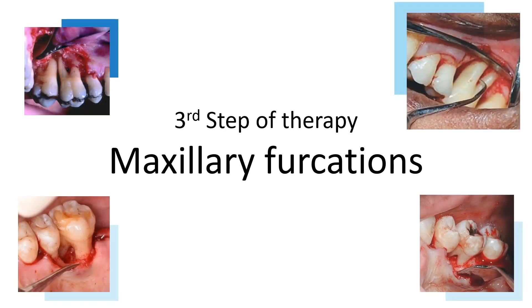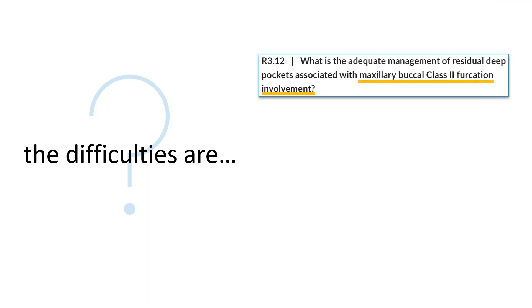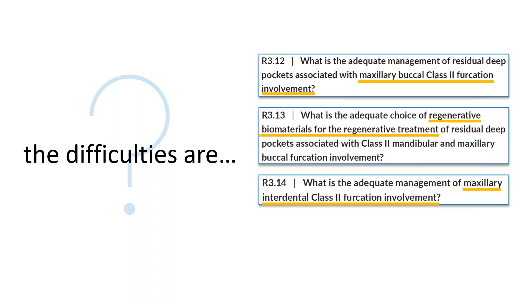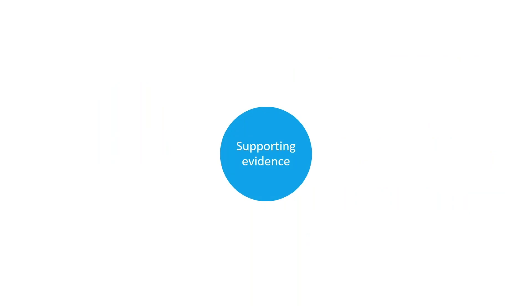Today, our task is to discuss a part of the third step of therapy, specifically maxillary furcations. Treatment of maxillary furcations is a very complex aspect of periodontotherapy. We will look at the management of maxillary buccal class 2 furcation involvement, the regenerative biomaterials used, as well as the management of interdental maxillary class 2 and class 3 furcation involvement. To answer these questions, the guidelines referenced four main papers.